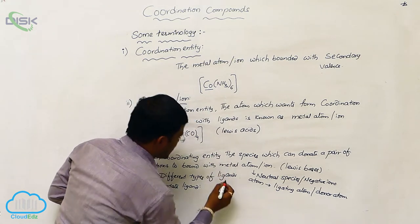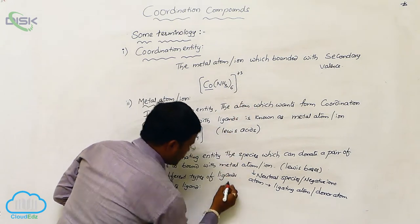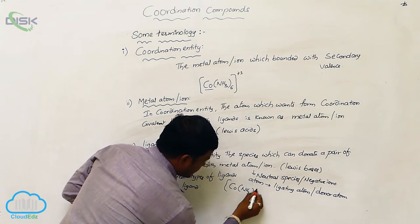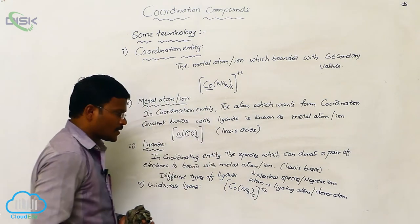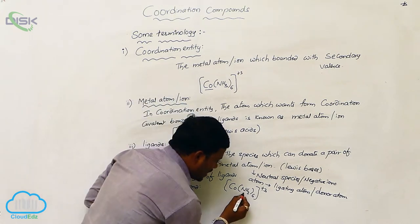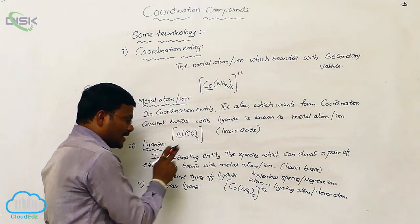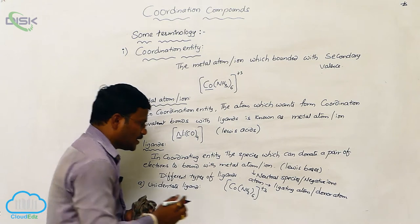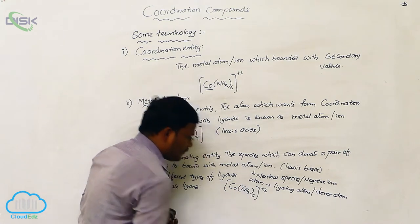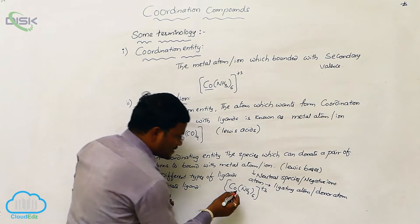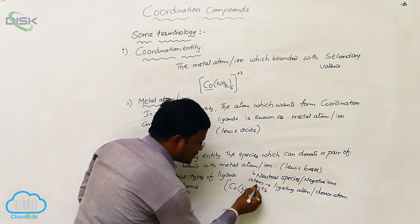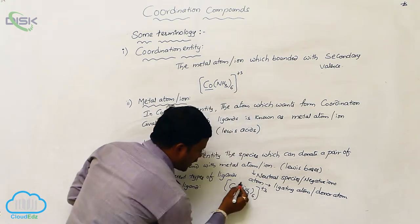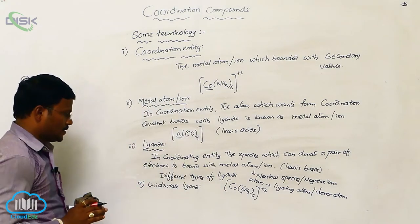Let us have one example. In the case of Co(NH₃)₆³⁺, ammonia is considered as a ligand. But in ammonia, only nitrogen can donate its non-bonding pair of electrons towards the metal, because nitrogen has a lone pair of electrons. So nitrogen is considered the ligating atom or donor atom, whereas total ammonia is considered the ligand.